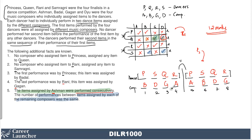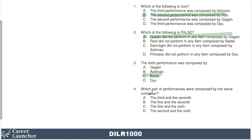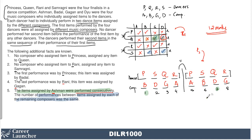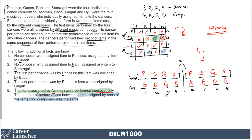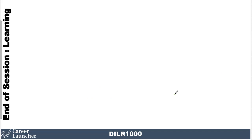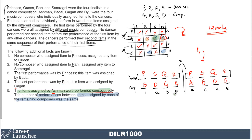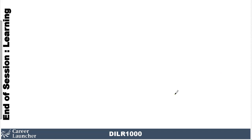The sixth performance was performed by S and assigned by B. Which performances were composed by the same composer? Checking: third and seventh — no. First and seventh — no. First and sixth — yes, that is the answer. Second and sixth — no. So we have all four answers and the 12 marks. CAT LRDI can be challenging, but if you are systematic, don't hurry, and work neatly, you can absolutely solve every question beautifully. I hope this helped and gave you confidence. See you in the next lesson.